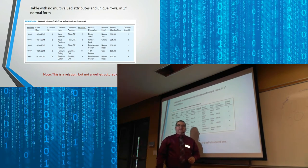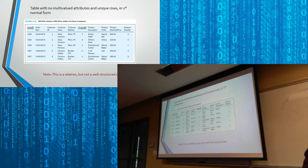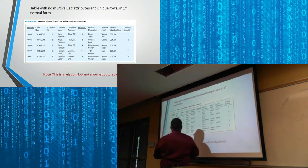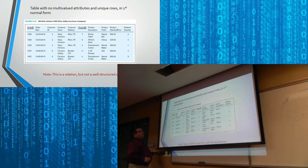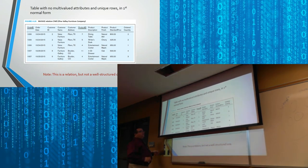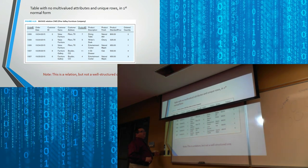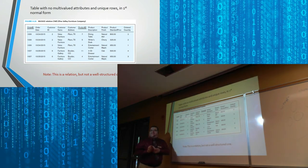This is technically in first normal form, but it's horrible. It's not normalized, but you are able to retrieve any given value if you know the order ID and the product ID — between the two you can retrieve any of this. However, there's a ton of anomalies in it.